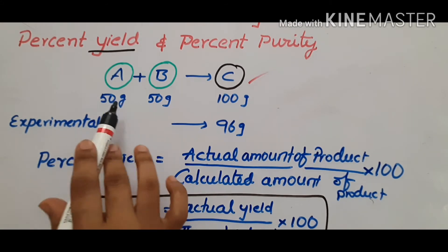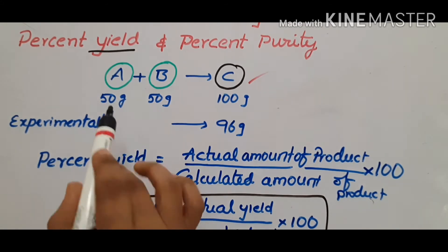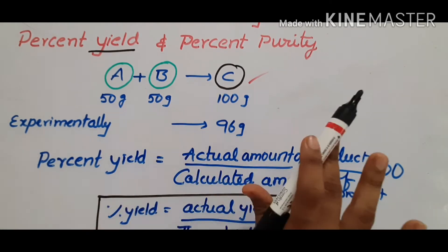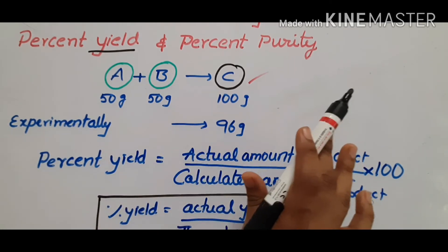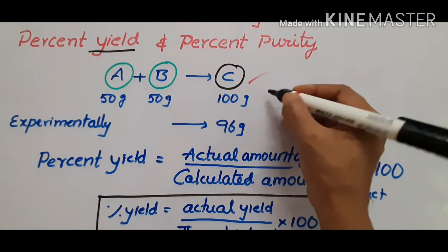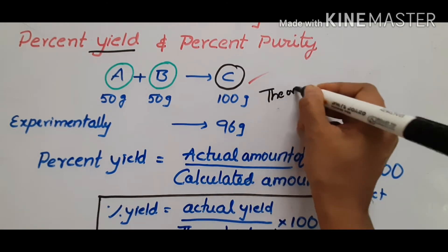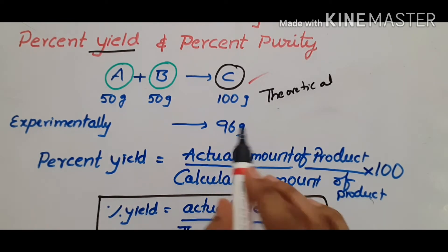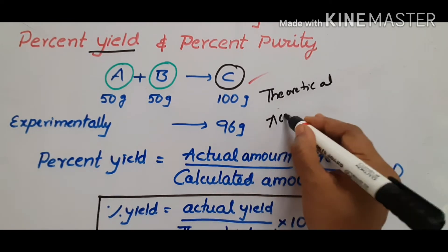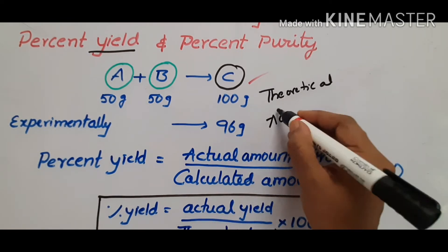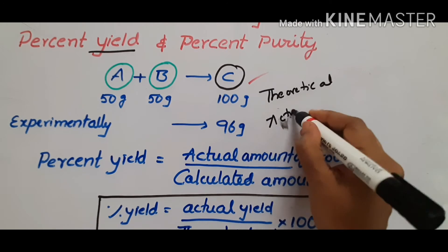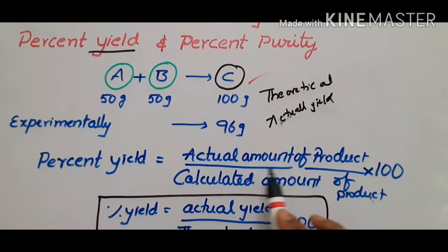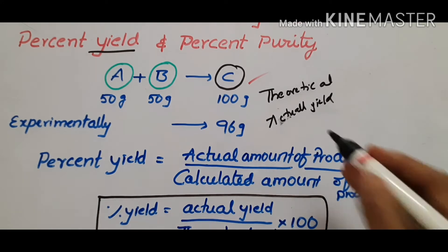A is a reactant, B is a reactant. These two reactants — 50 and 50 grams. I can calculate using reaction masses theoretically. In the chemistry lab, I will actually get 96 grams. This is the actual yield — the amount of product obtained. This is actual yield.